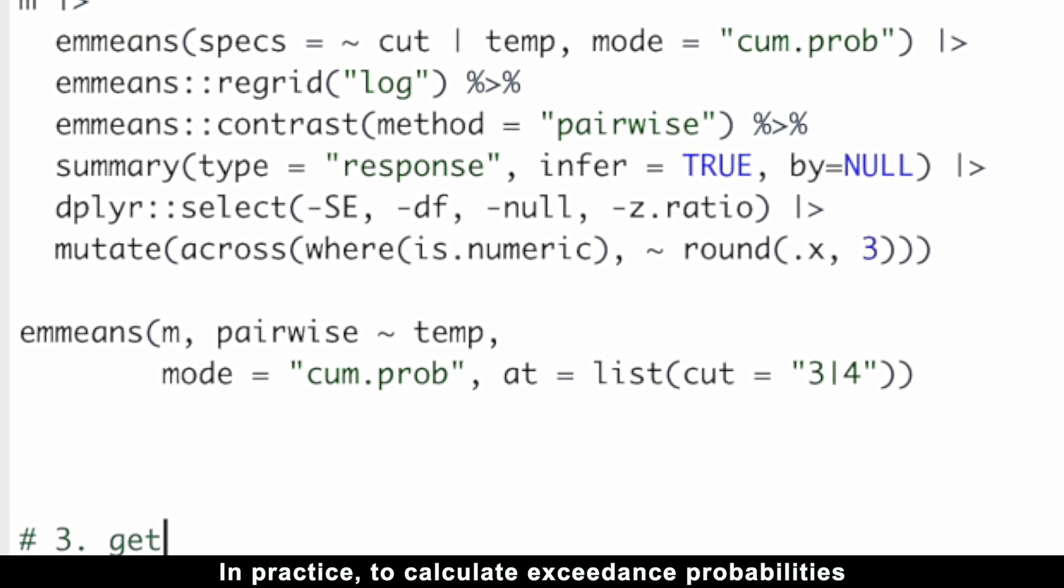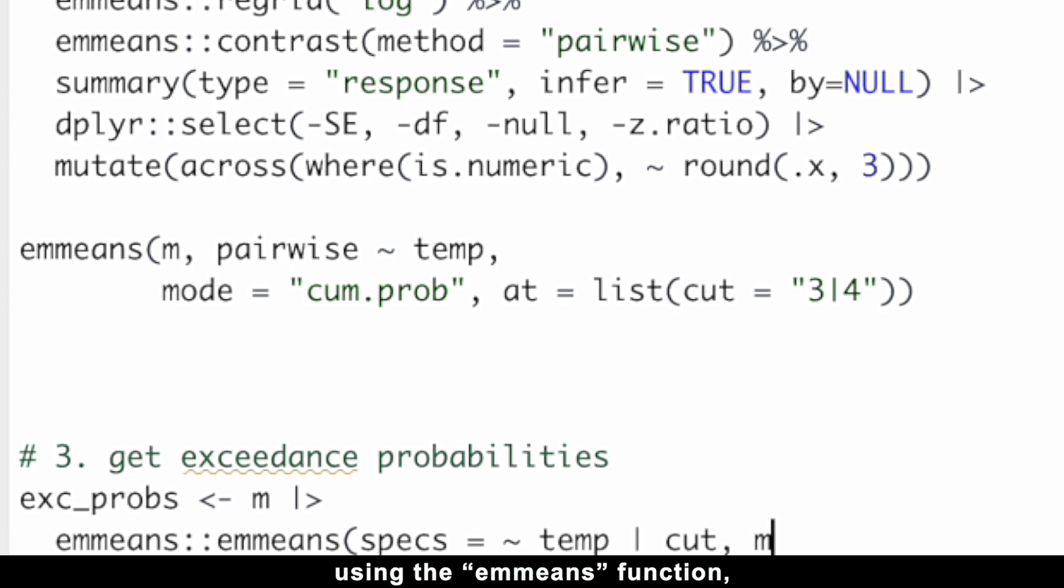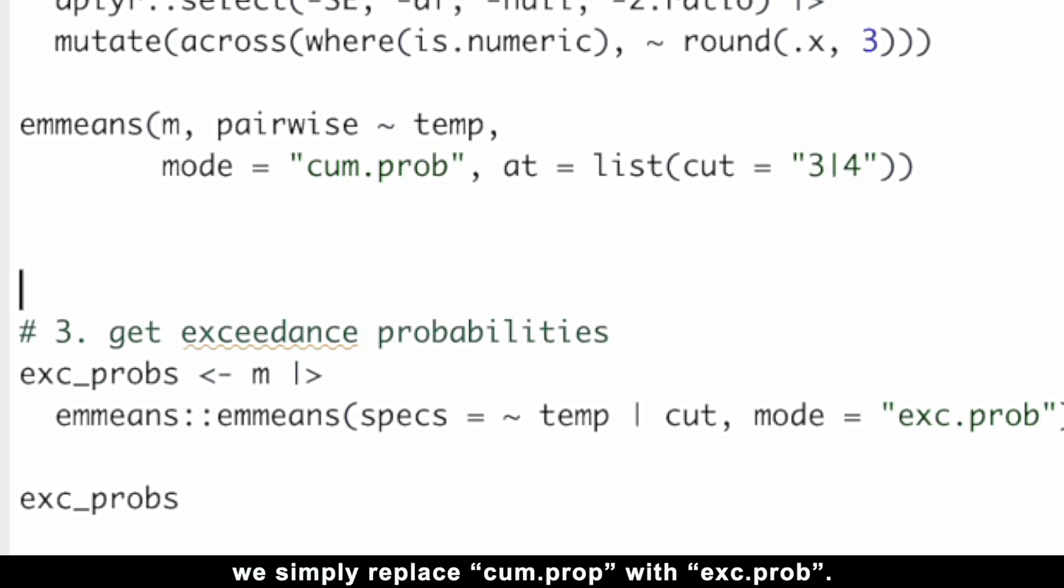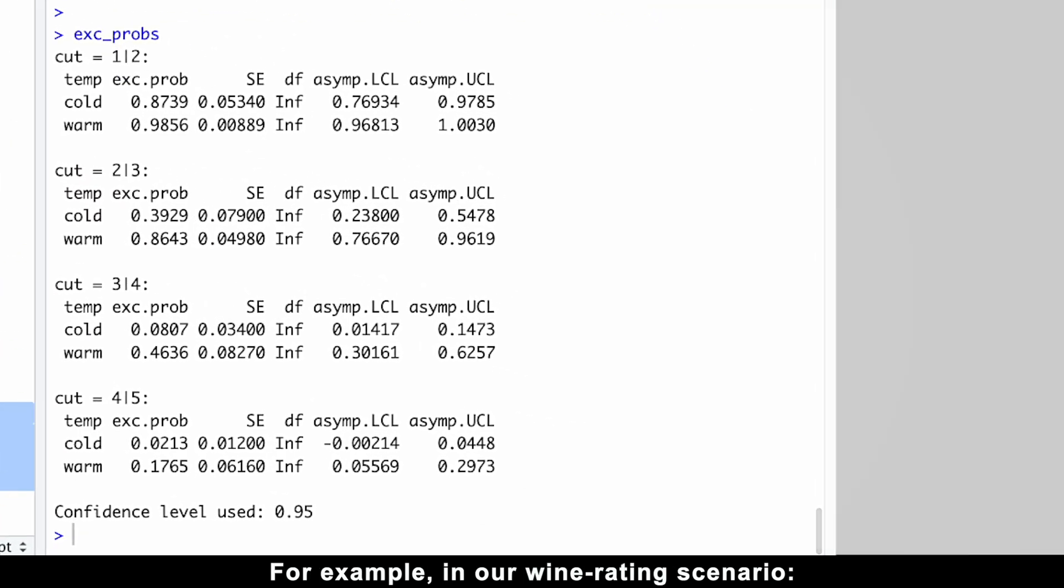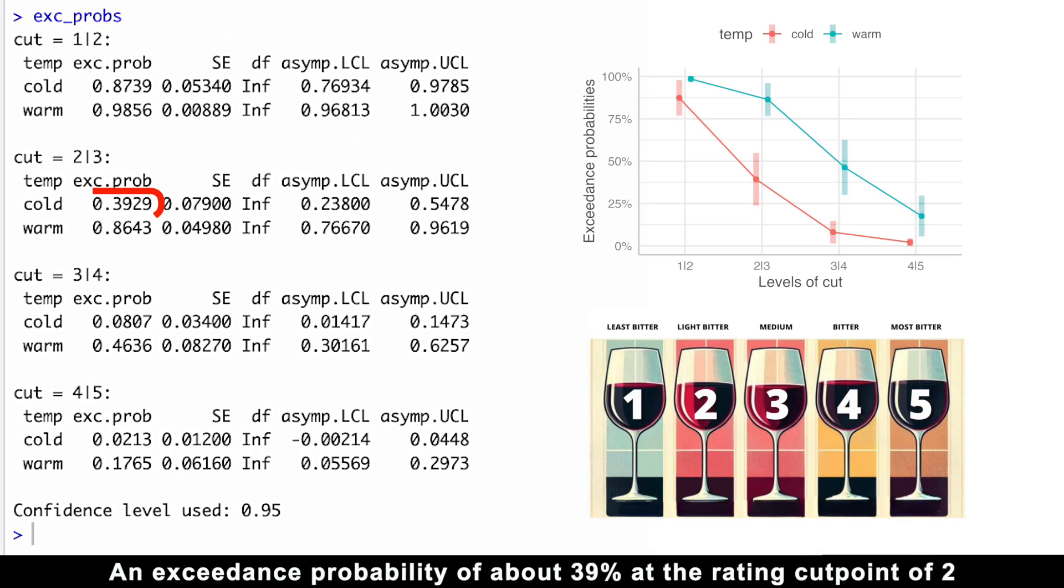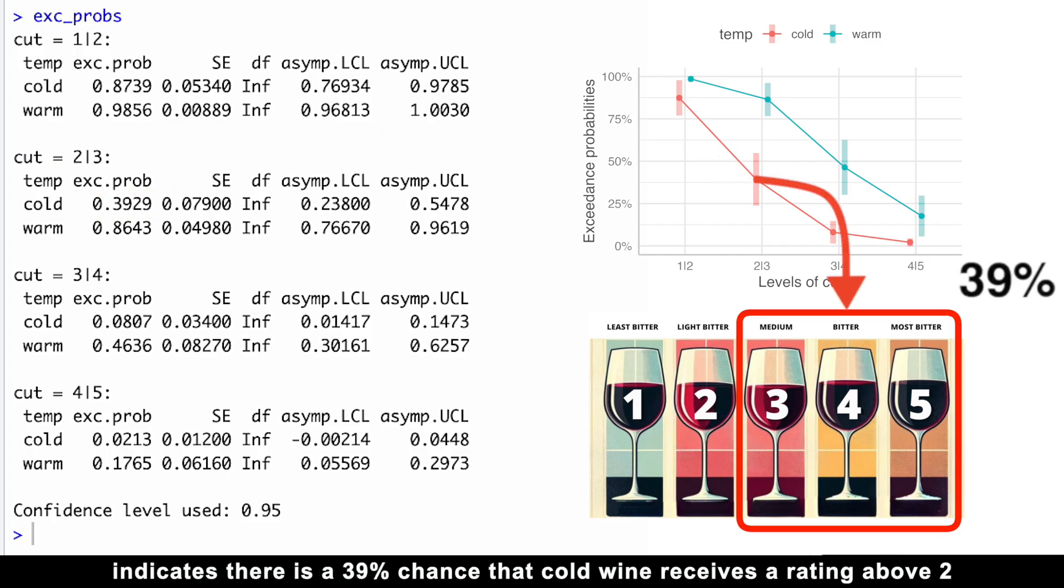In practice, to calculate exceedance probabilities using the emmeans function, we simply replace cumprop with exprop. For example, in our wine rating scenario, an exceedance probability of about 39% at the rating cut point of 2 indicates there is a 39% chance that cold wine receives a rating above 2, that is, ratings 3, 4 or 5.